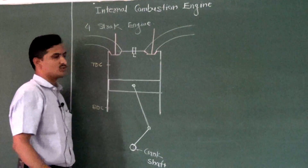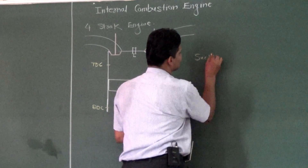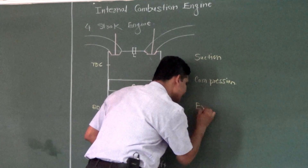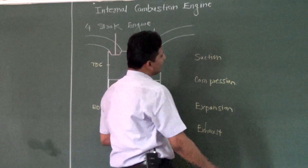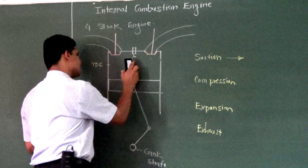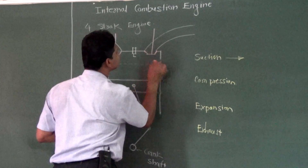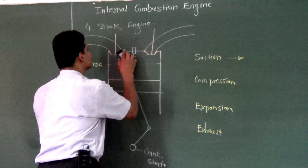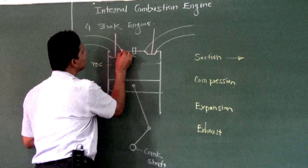Now let us understand how the four processes work inside the engine: suction, compression, expansion, and exhaust. For the suction process — before the suction stroke, the piston will be at top dead center. The inlet valve will be in open position, meaning it has moved down some distance so space is available. The exhaust valve will be in closed position.